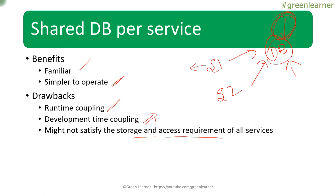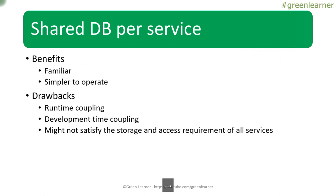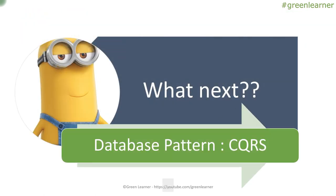That's all about these two patterns — sharing a database for microservices and having an individual database for each microservice. In further videos, we are going to focus on the first strategy: individual database for each microservice. We will address the challenges we discussed and see the patterns to solve them. First among them, we are going to talk about CQRS — it's very important and very easy to understand. If you like the content, please like, share, and subscribe. I'll see you in the next video with CQRS.